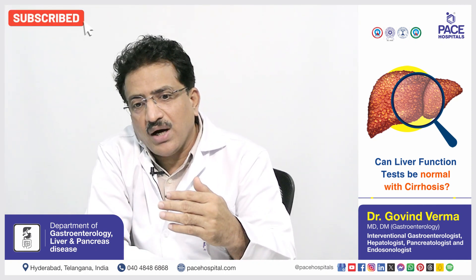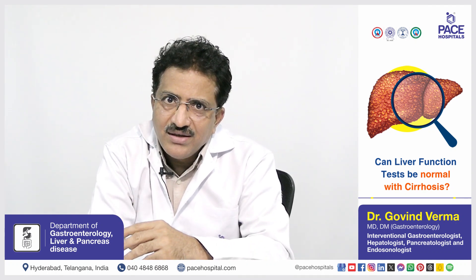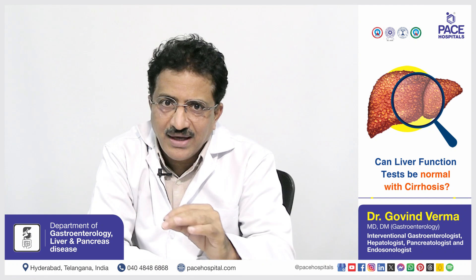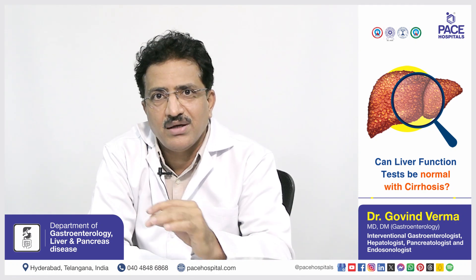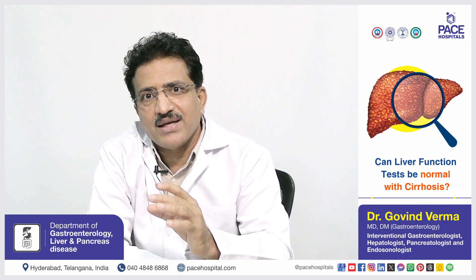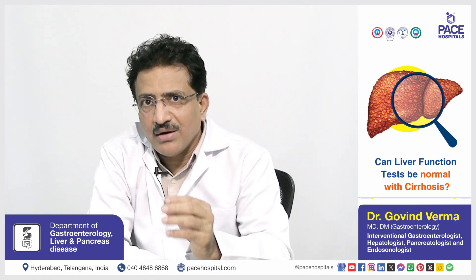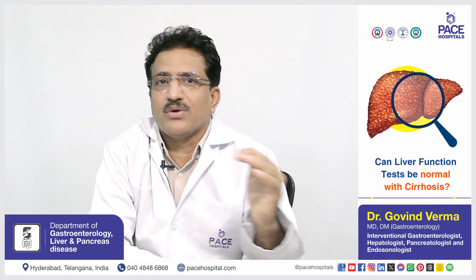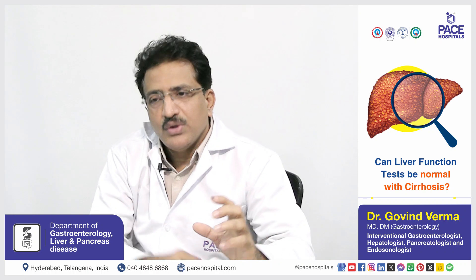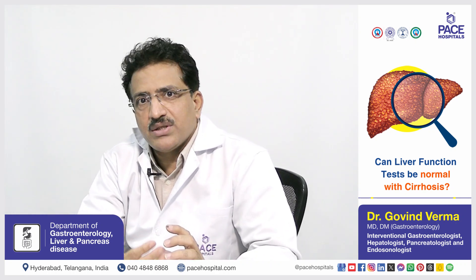Patients who have early cirrhosis can have absolutely normal liver function tests. When you do a liver function test, you will find bilirubin normal, enzymes normal, alkaline phosphatase normal, protein, albumin, prothrombin time — all normal. This can actually misguide you. A normal liver function does not rule out cirrhosis of liver; it just suggests it may be early cirrhosis, provided you have other parameters or tests showing cirrhosis of liver.